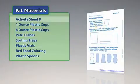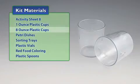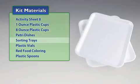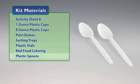You will need the following materials from the kit: Activity Sheet 8, 1-ounce plastic cups, 8-ounce plastic cups, petri dishes, sorting trays, plastic vials, red food coloring, and plastic spoons.